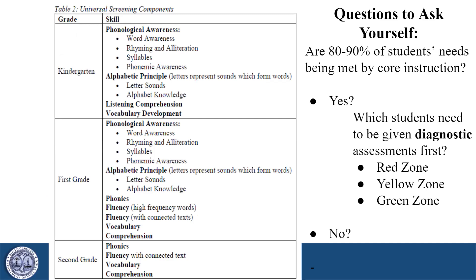Once the Universal Screener is given to students in kindergarten and first grade, it is important for school leaders, grade level teams, and teachers to answer the question: Are 80-90% of students' needs being met by core instruction? Once the school has ensured that Tier 1 instruction is effective in meeting the needs of 80-90% of students, supplemental instruction is provided in Tier 2. Approximately 15% of students would need additional support in Tier 2, in addition to the 90 minutes of core literacy instruction. If Tier 1 is not effective, refer to Section 2 of the Dyslexia Handbook.